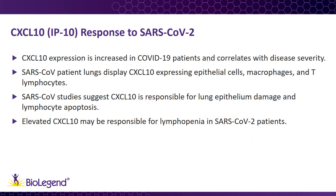Similar to both CCL2 and CCL3, CXCL10 expression is increased in response to SARS-CoV-2 and correlates with COVID-19 disease severity. CXCL10 is a potent chemoattractant of monocytes, macrophages, and T-lymphocytes. Similar to SARS-CoV, an early increase in CXCL10 occurs in response to SARS-CoV-2. CXCL10 expression is seen in cells of SARS-CoV patient lungs, including lung epithelial cells, macrophages, and T-lymphocytes at areas of injury. This expression suggests the recruitment of additional immune cells to the area of injury, which can further perpetuate the cytokine storm.